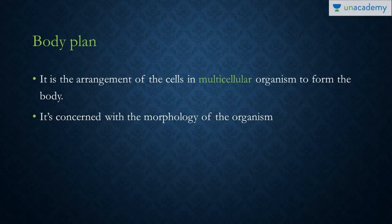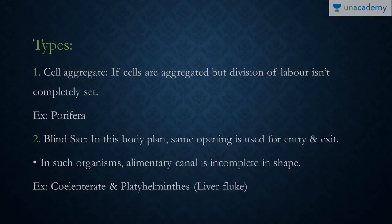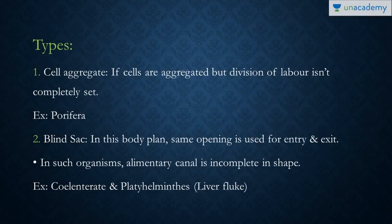We'll start with what exactly is a body plan. A body plan is the arrangement of cells in a multicellular organism to form the body. It is basically concerned with the morphology of the organism. The body plan of an organism can be of various types.